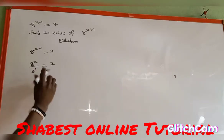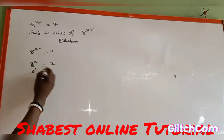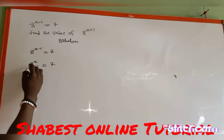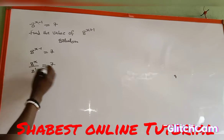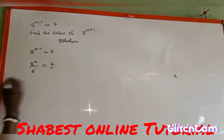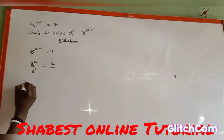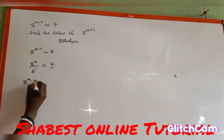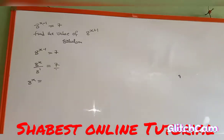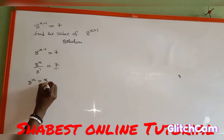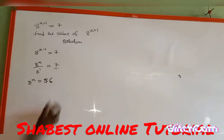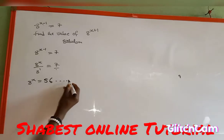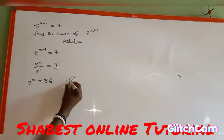From here, now you can cross-multiply. 8s multiplied by 1 will give me 8s, which is equal to 8 multiplied by 7, which is 56. So I can name it as equation 1.